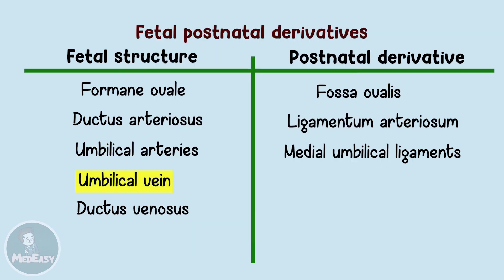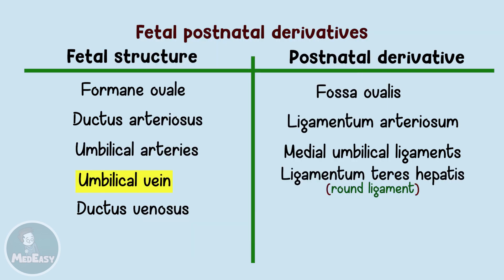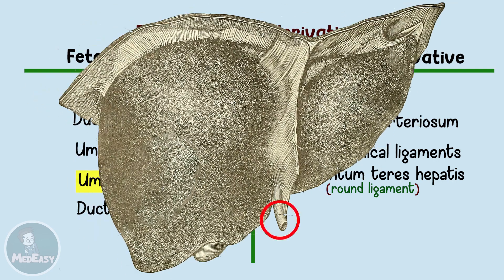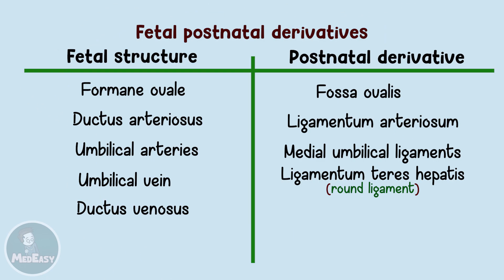The umbilical vein will form the ligamentum teres hepatis, or round ligament, in the lower margin of the falciform ligament. The ductus venosus, which courses from the ligamentum teres to the inferior vena cava, will be obliterated as well and will form the ligamentum venosum.